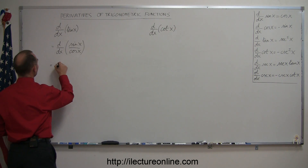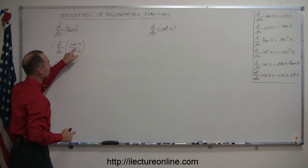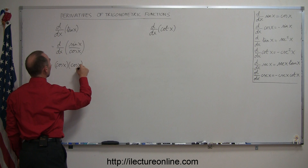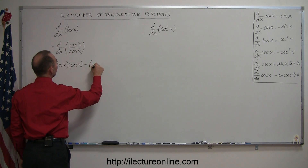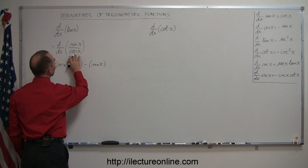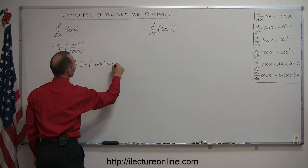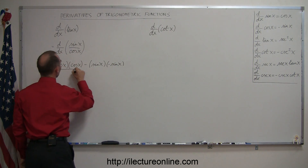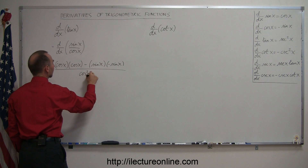So this is equal to the denominator, cosine of x, times the derivative of the numerator. We have learned that the derivative of sine is equal to cosine. So this is cosine of x, minus the numerator which is sine of x, times the derivative of the denominator, which is minus sine of x. The whole thing is divided by the denominator squared, which is cosine squared of x.